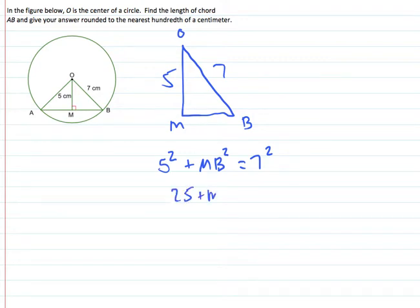25 plus MB squared equals 49. Subtract 25 from both sides and we get MB squared is equal to 24.